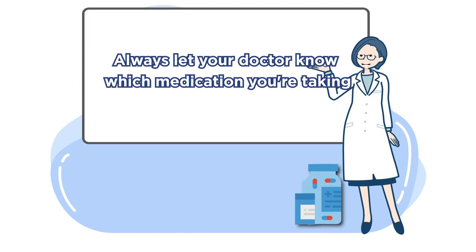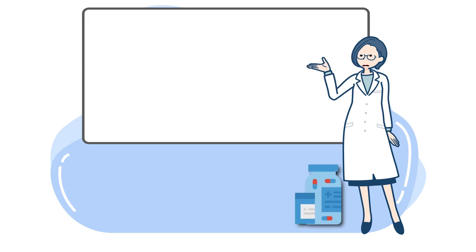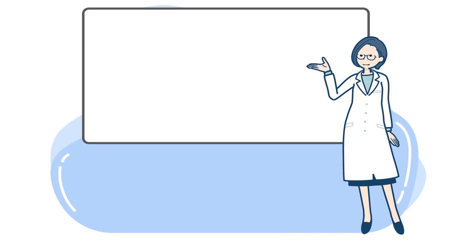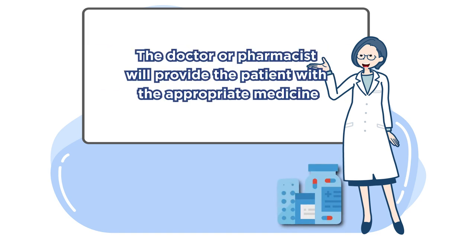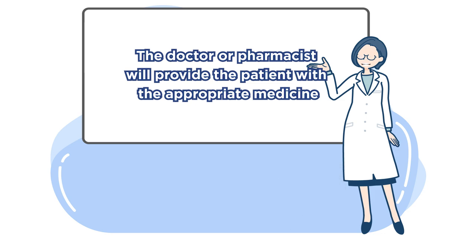Some drugs may affect the action of DOAC. This picture shows examples of interactions between DOAC and other medicines. When you go to any other place — another hospital, clinic, or drug store — just tell them the name of the DOAC you are taking, for example Dabigatran. The pharmacist or doctor will check the interaction for you. Just remember the name of the DOAC you take.